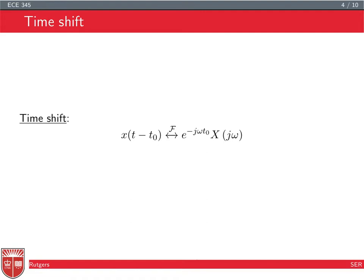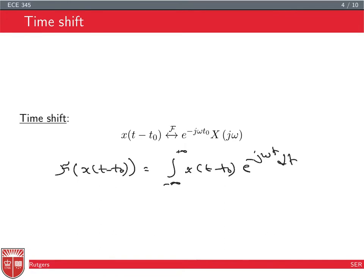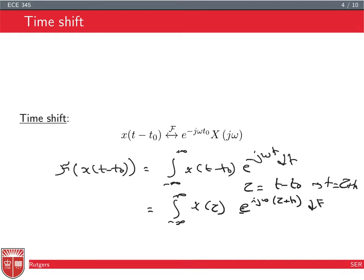If you're interested in where this comes from, it follows immediately from the definition. The Fourier of x(t - t0) is equal to the integral of x(t - t0) * e^(-j*omega*t) dt. Then you do a change of variable: let tau equal to t minus t0. The bounds stay the same because it's infinity, so it becomes x(tau) times e^(-j*omega*(tau + t0)) d_tau, since t equals tau plus t0 and dt equals d_tau. This gives you the term e^(-j*omega*t0) which you can pull out.